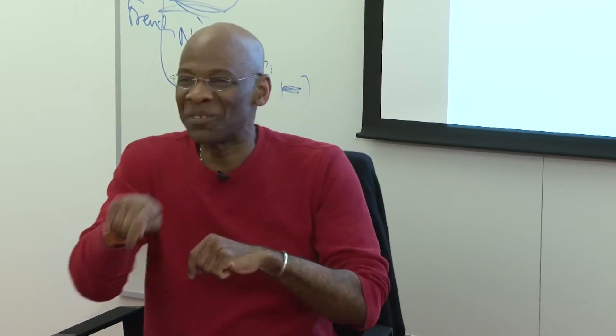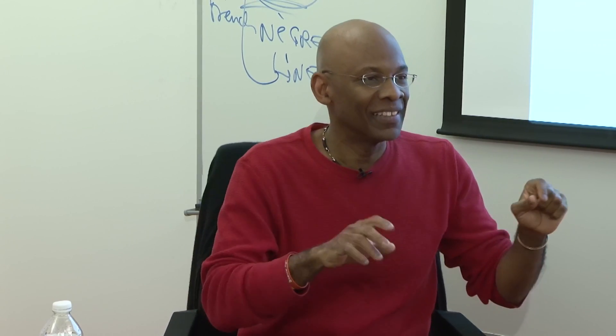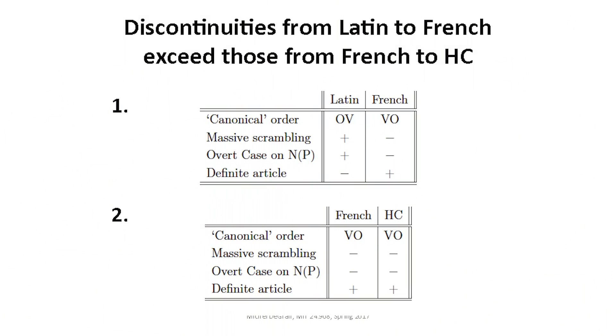Many languages have this capacity — at MIT we call it scrambling. You can scramble things around. You can have a sentence with subject, verb, and object, and with other roles like in 'John gave a book to Mary' — the giver, what's being given, the recipient — things can move around in the sentence, they can be scrambled. Latin has that. You can scramble things around. Not French.